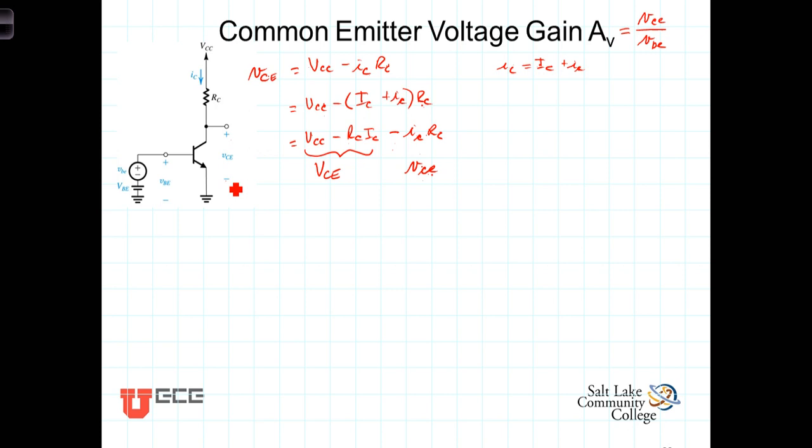You'll recall from the video where we went through and did the small signal approximation, we found that the small signal component of the collector current was equal to I sub C over V sub T times VBE. So if we substitute this in to this component right here, we get then that lowercase VCE, the small signal component of the collector, is equal to then a negative, there is an inversion here, replacing I sub C with I sub C over VT times VBE times R sub C.